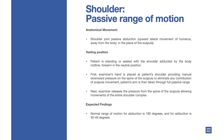Patient is standing or seated with the shoulder adducted by the body midline, forearm in the neutral position. First, the examiner's hand is placed at the patient's shoulder providing manual downward pressure on the spine of the scapula, to eliminate any contribution of scapula movement. The patient's arm is then taken through full passive range.